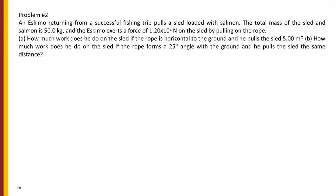Problem number 2. An Eskimo returning from a successful fishing trip pulls a sled loaded with salmon. The total mass of the sled and salmon is 50 kilograms and the Eskimo exerts a force of 1.2 times 10 to the power of 2 newtons on the sled by pulling on the rope. How much work, letter A, does he do on the sled if the rope is horizontal to the ground and he pulls the sled 5 meters? And B, how much work does he do on the sled if the rope forms a 25 degree angle with the ground and he pulls the sled the same distance?